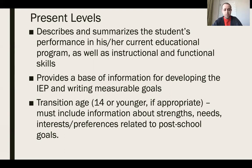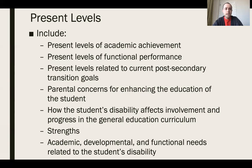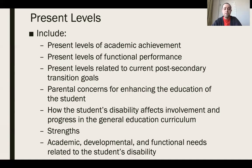If the student is age 14 or older, we do have to have a transition section. We also need to include academic performance, functional performance, the transition section, any parent concerns, how the student's disability affects their involvement in the general education curriculum, the student's strengths, and any academic, developmental, and functional needs. Essentially, present levels paint a picture of strengths and needs, and we address those needs through measurable annual goals or specially designed instruction.